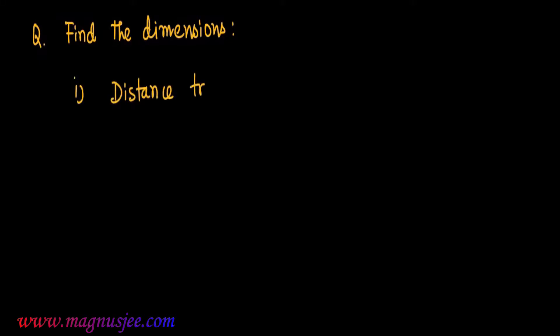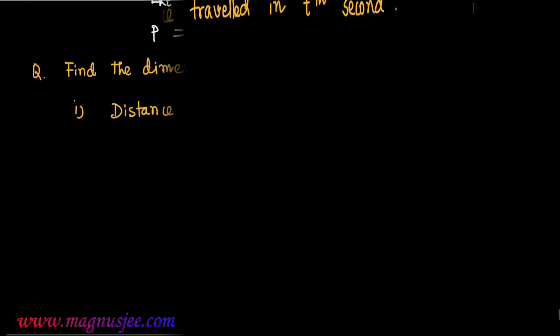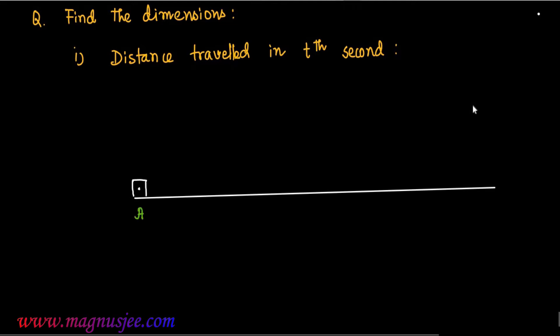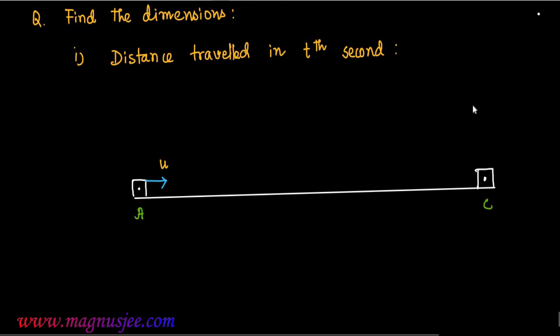We need to find the dimension of distance travelled in the t-th second. We can draw a diagram in which a body starts at point A and moves with initial velocity u, reaching point C in the t-th second.